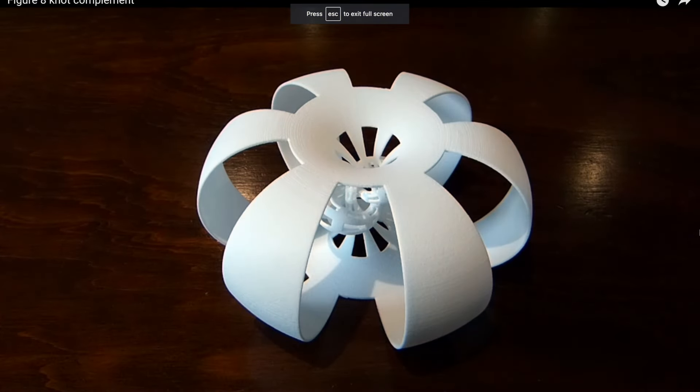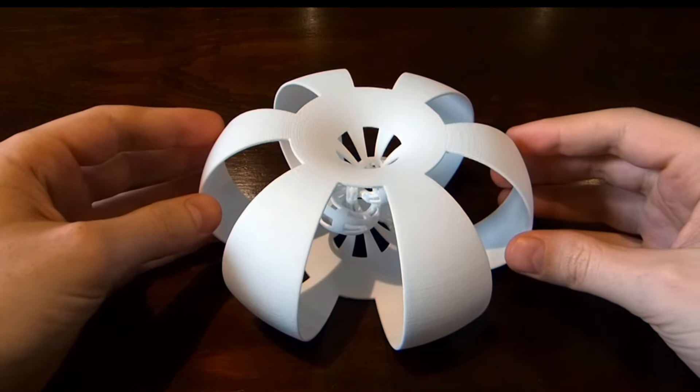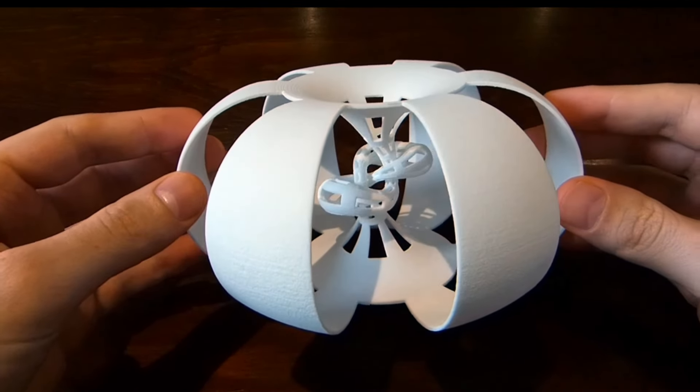Hi, my name is Henry Sagerman. This is figure eight knot complement. Again, this is joint work with Saul Schleimer and Francois Gargote.